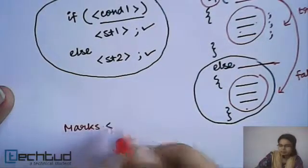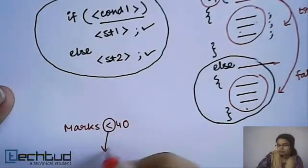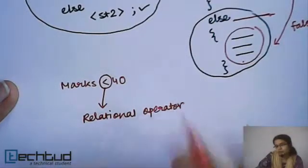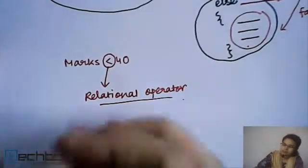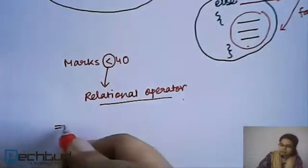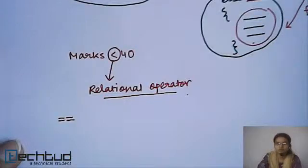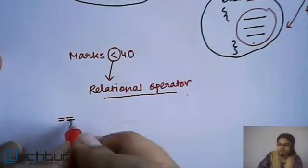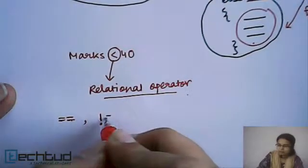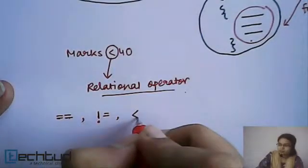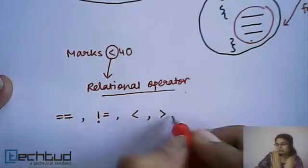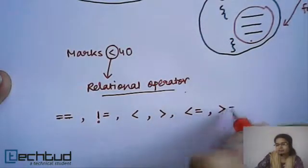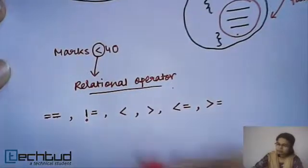We already used the less-than operator, which is called a relational operator. There are six relational operators in C: equal-to is written as two equal signs (==); not-equal-to is exclamation then equal (!=); less-than is simply the less-than sign (<); greater-than is the greater-than sign (>); less-than-or-equal is less-than then equal (<=); and greater-than-or-equal is greater-than then equal (>=).